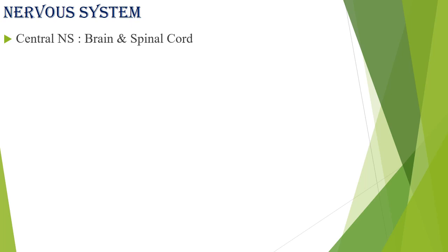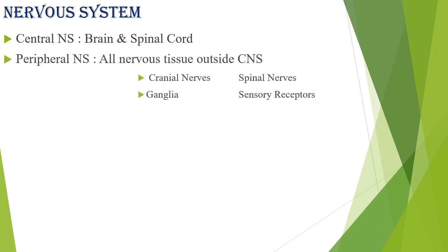The peripheral nervous system includes all the nerves or neurons apart from the brain and spinal cord. Of course the spinal cord is a kind of nerve — a very big nerve — but together the brain and spinal cord form the central nervous system. All other nervous tissues are the peripheral nervous system.